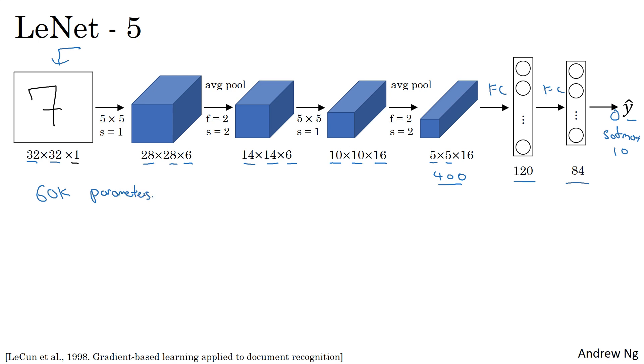A modern version of this neural network would use a softmax layer with a 10-way classification output. Although back then, LeNet-5 actually used a different classifier at the output layer, one that's useless today. This neural network was small by modern standards, had about 60,000 parameters. Today, you often see neural networks with anywhere from 10 million to 100 million parameters, networks that are literally about a thousand times bigger than this network. But one thing you do see is that as you go deeper in the network, the height and width tend to go down.